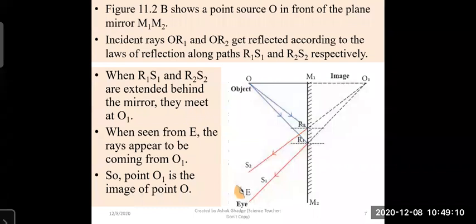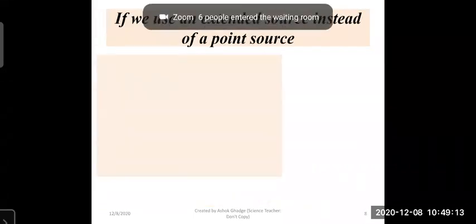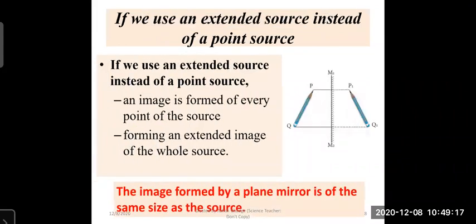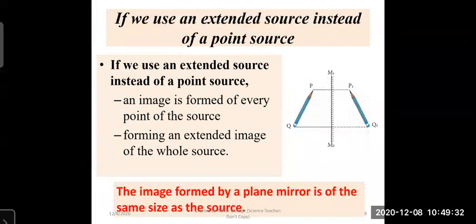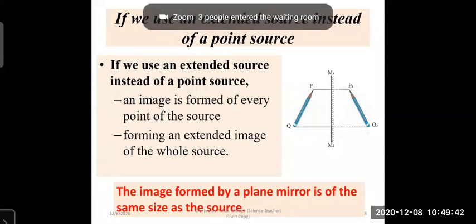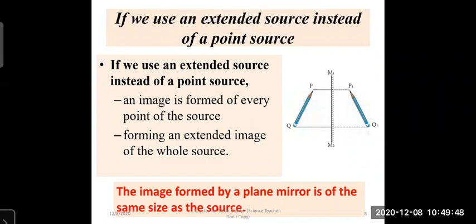We have also seen how an image of an extended source is obtained. Points P and Q form images P1 and Q1 respectively, and all points between P and Q also form images between P1 and Q1. So if we use an extended source instead of a point source, an image is formed of every point, resulting in an extended image of the whole source. The image formed by a plane mirror is the same size as the source.